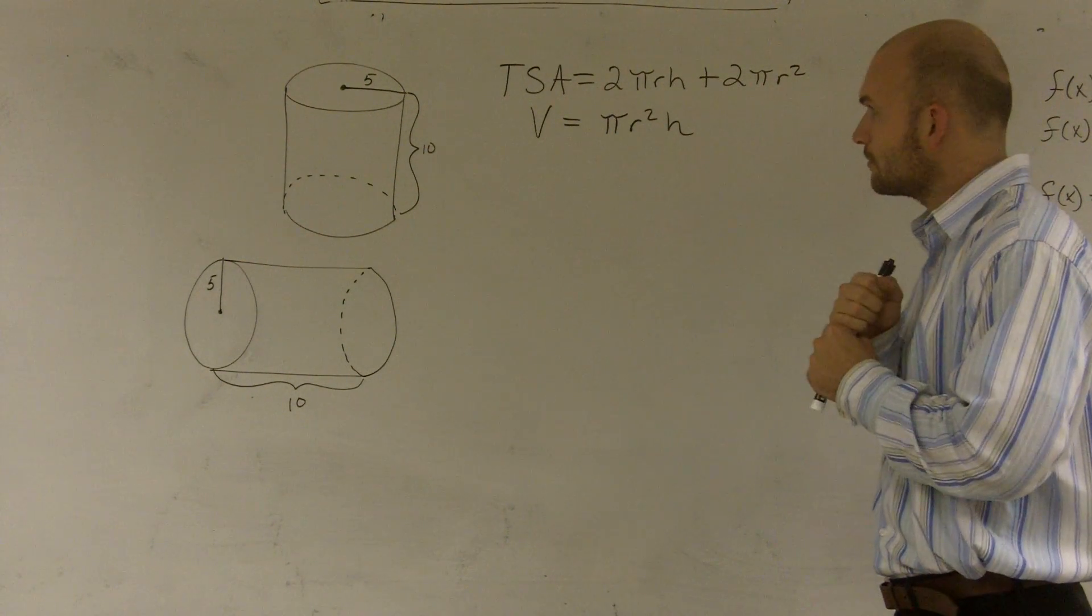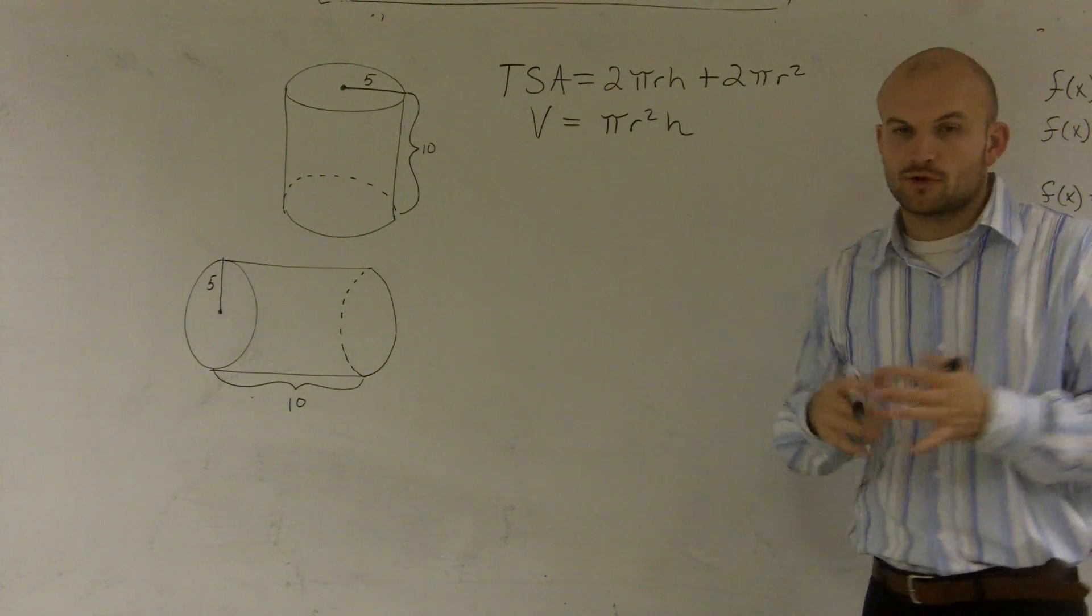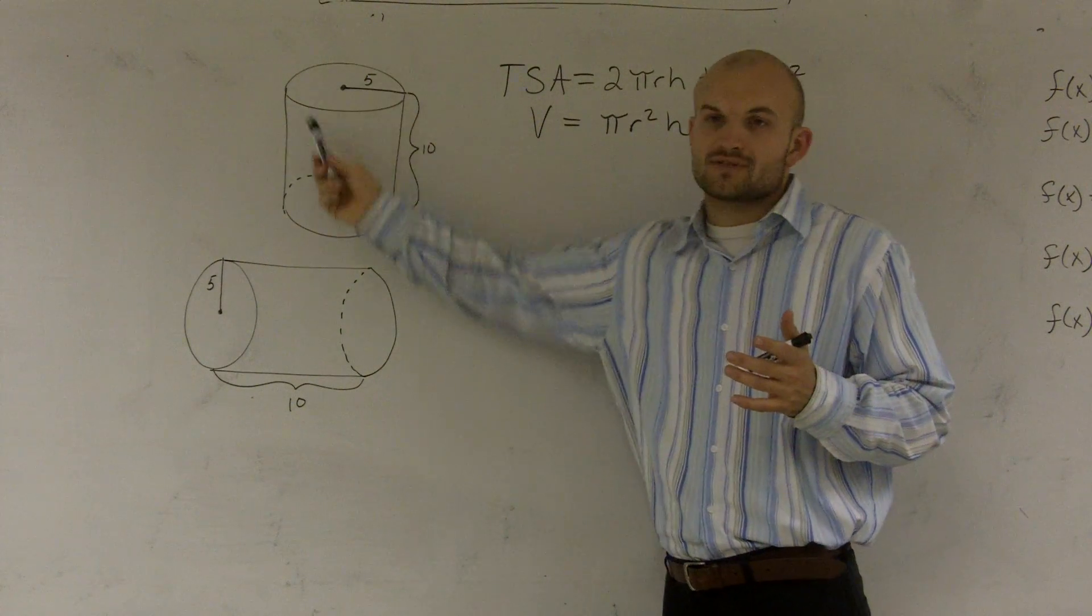So what we have is two formulas up here. The first one is to find the total surface area, and remember, total surface area is everything that encompasses the outside of my cylinder.